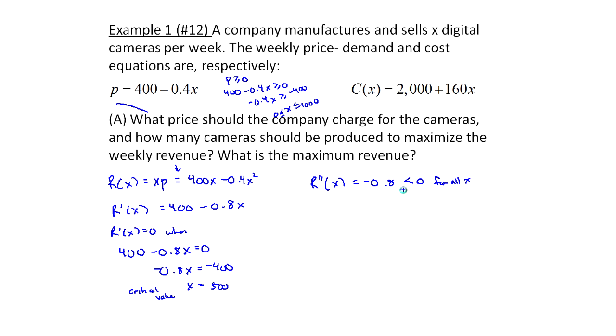Whenever r double prime or f double prime, whatever function you're looking at, is less than zero for the point you're looking at, and it's the only critical value in the interval, then you can say that the point you're looking at is the location of absolute max. So in other words, we have an absolute max at x equals 500. So this answers the question, how many cameras should be produced? 500 should be produced.